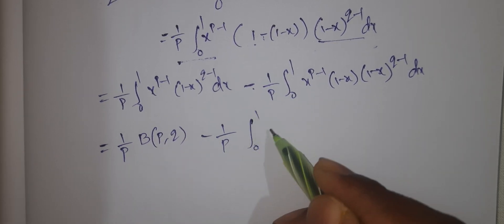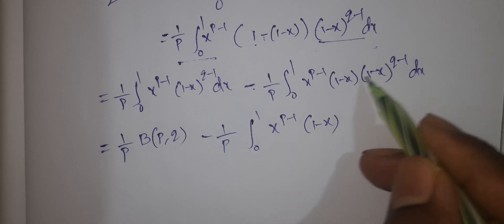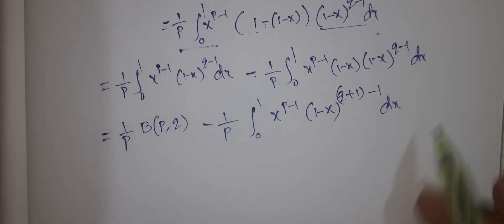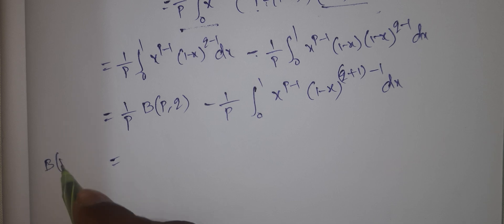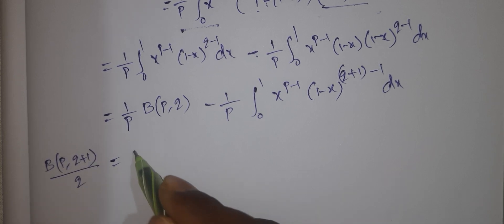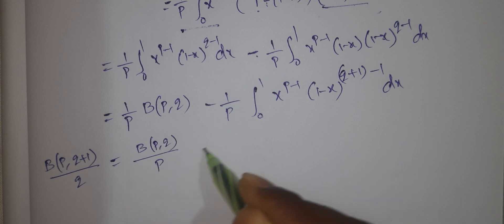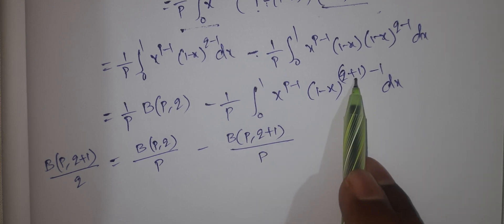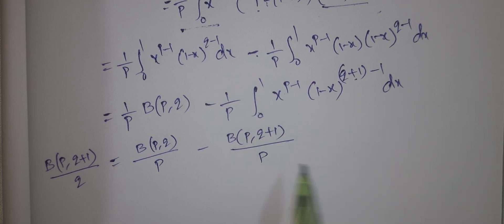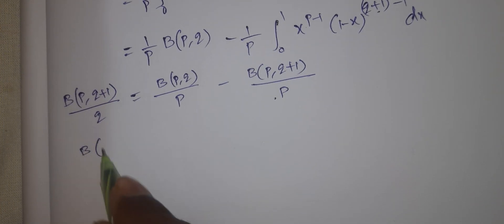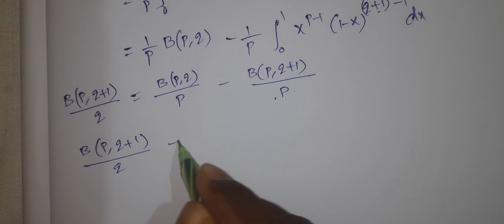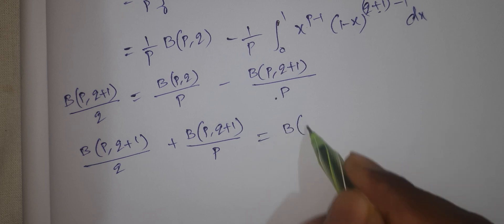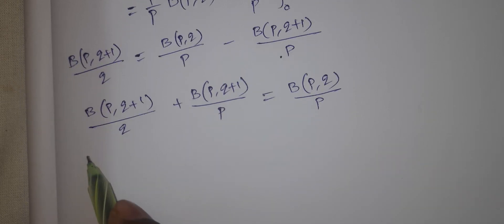From the integral from 0 to 1 of x to the power of p minus 1 times 1 minus x to the power of q plus 1 minus 1 dx, we can identify: beta of p, q plus 1 by q equals beta of p, q by p, minus beta of p, q plus 1 by p. Rearranging: beta of p, q plus 1 by q plus beta of p, q plus 1 by p equals beta of p, q by p.